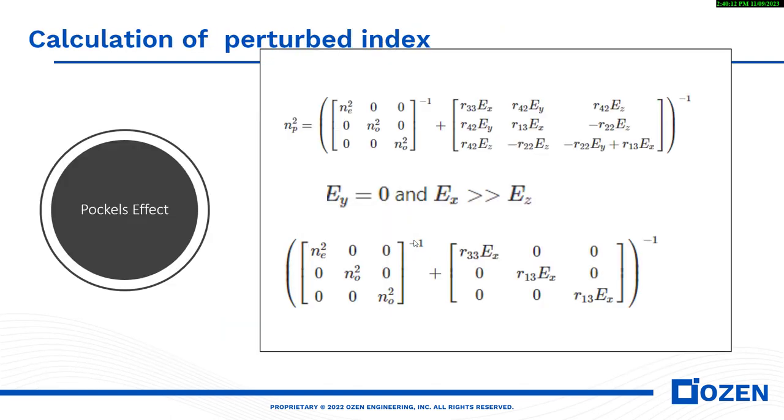Let's go to this section: how we can calculate the perturbed index. This is the full tensor that we can calculate for the Pockels effect in lithium niobate. We want to see that if we import the E field, we want to know how much our effective index changes in different directions. But if you look at this formula, you see that we need the Ex, Ey, Ez, and R33, R42, R13, R22. These are the parameters you can access through the reference. But for this case, the value of Ey is equal to zero and Ex is much larger than Ez. So we can simplify this formula to this case.